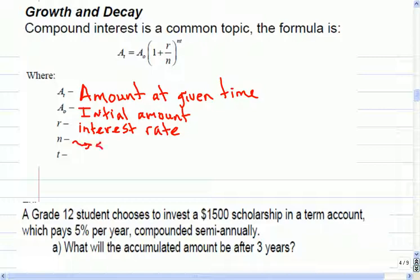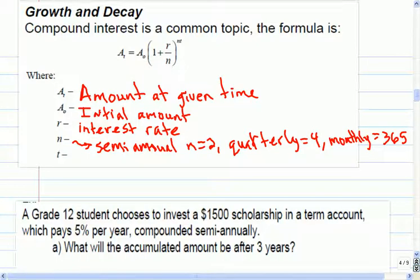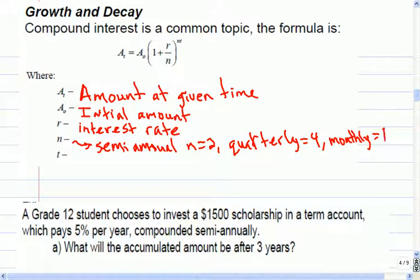The best examples I could give you, if we said something like semi-annual, then N would be equal to 2. Quarterly equals 4. Monthly would be 12. Daily would be 365. Monthly is 12 months.